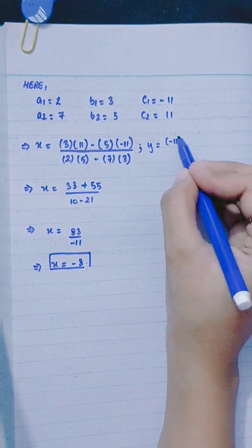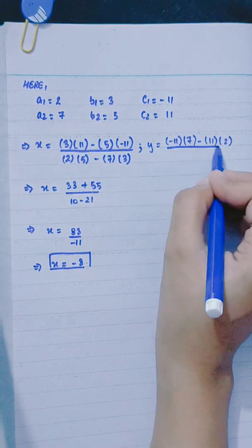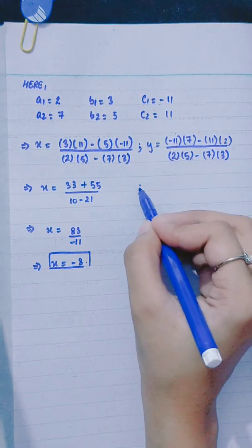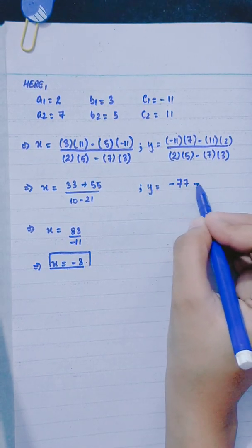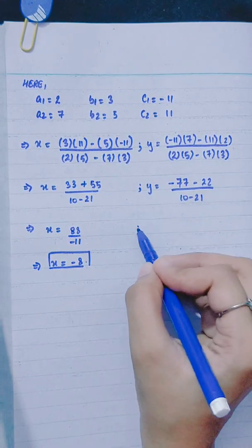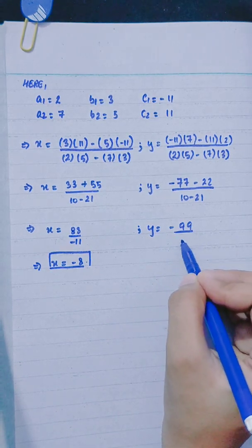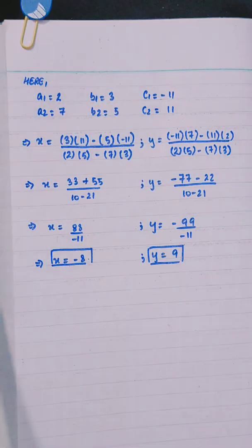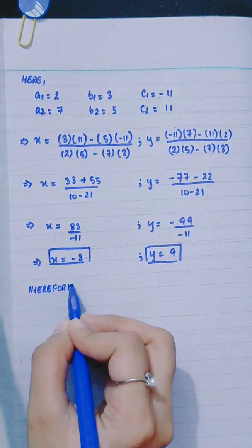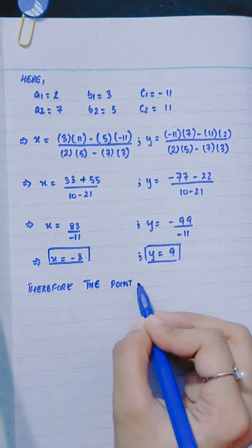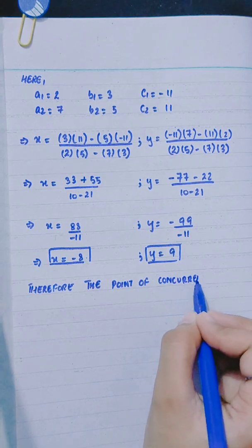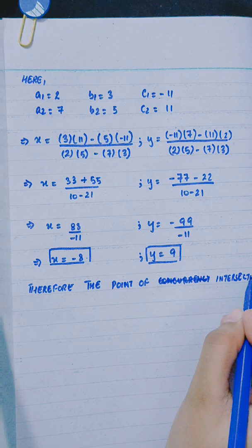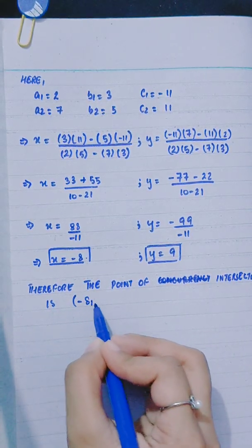y = ((-11) × 7 - 11 × 2) / (2 × 5 - 7 × 3) = (-77 - 22) / (10 - 21) = -99 / (-11) = 9. So y = 9. Therefore, the point of intersection is (-8, 9).